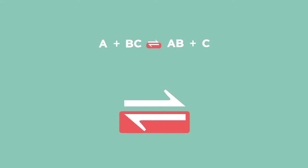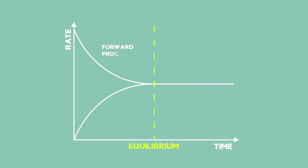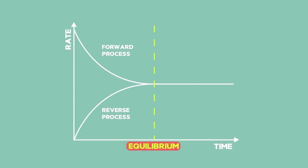If we study the general reversible reaction and we measure the concentration of one of the reactants and one of the products versus time, a graph similar to the next one may be produced. Chemical equilibrium can also be represented graphically by plotting the forward and reverse reaction rates against time. Let's look at this graph in more detail.